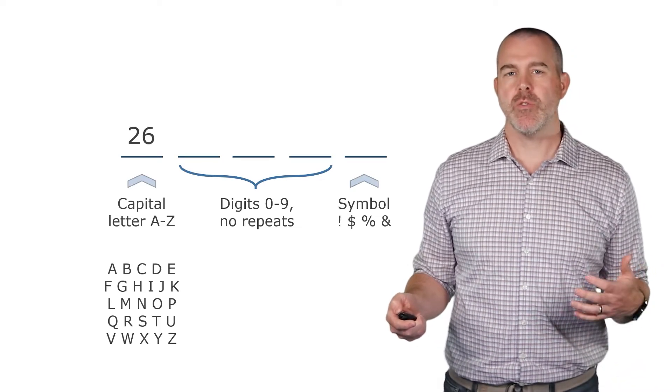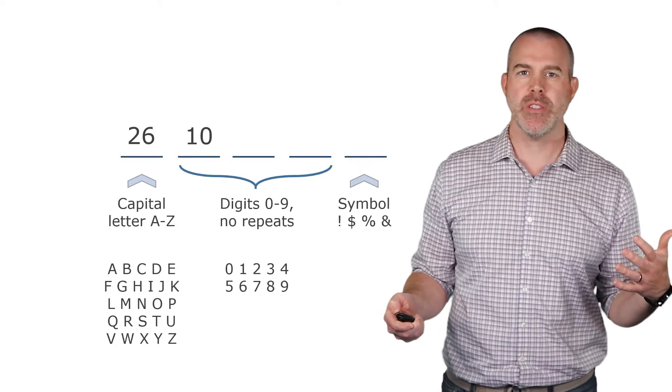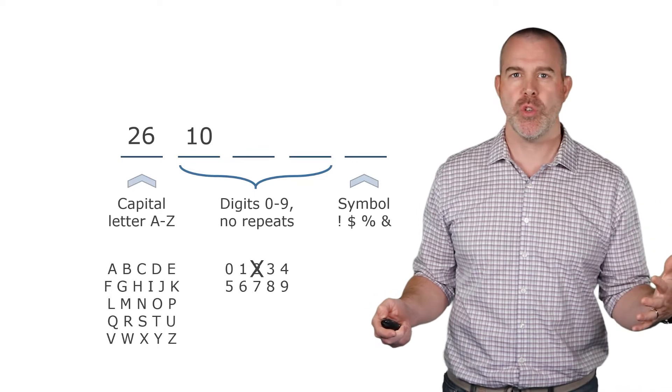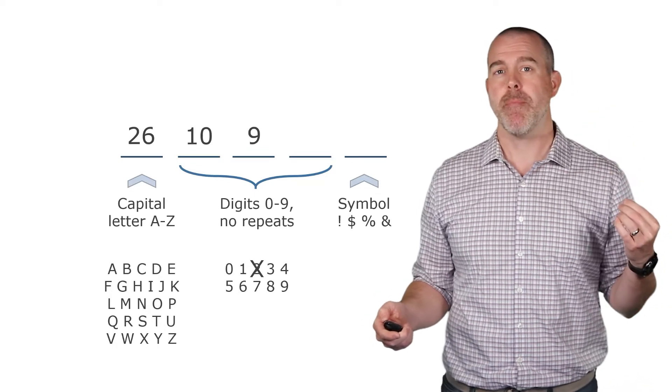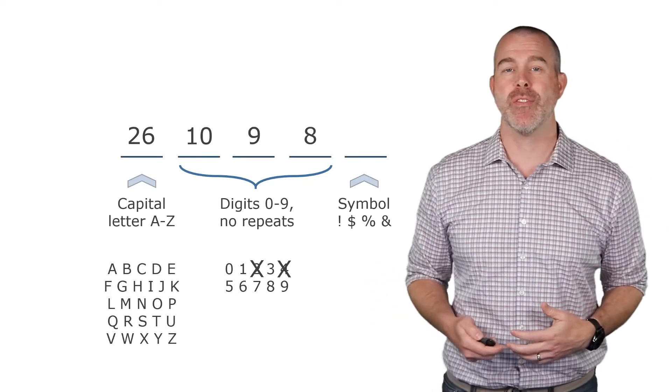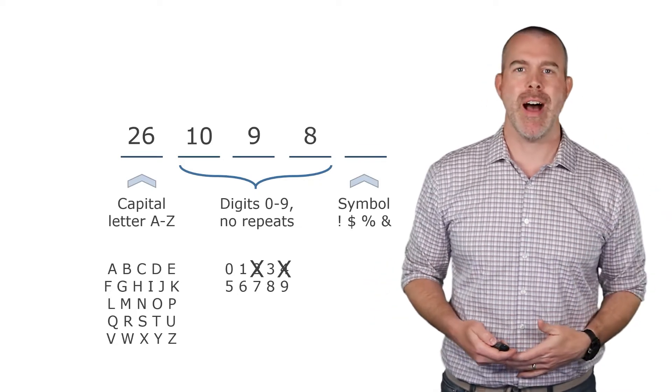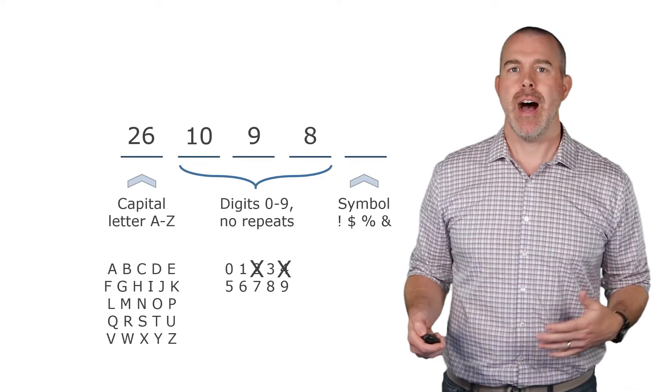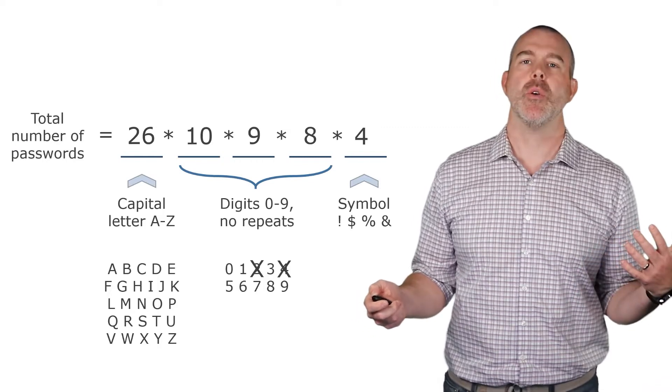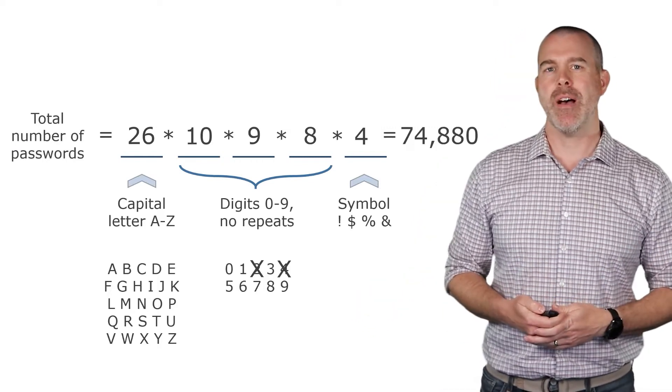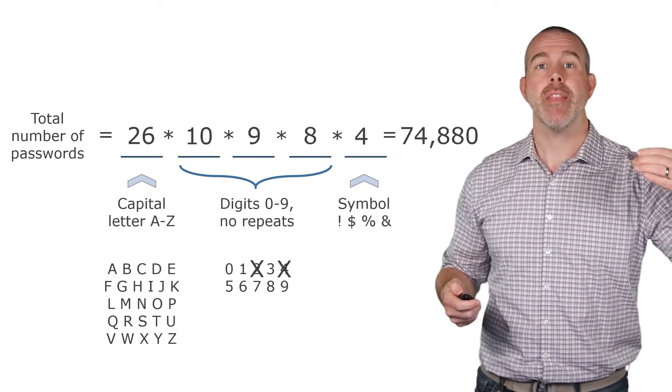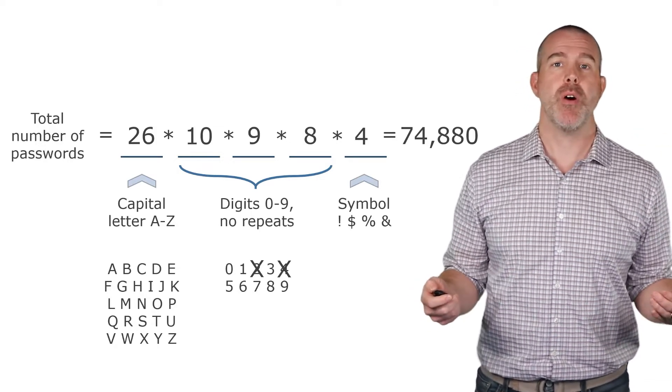So we have 26 capital letters. For the digits, well, there's 10 digits, so there's 10 choices there, but we can't have any repeats. So let's say we choose two, for example, then there's only nine left, right? And let's say the next one chosen is four, then there's only eight left for the third one. So we've reduced the number of options for each one. Then for the symbols, we have four different symbols. If we multiply all of those together to get the total, we get 74,880 possible passwords. The key here, again, is we're multiplying the number of ways to do each part of the process.